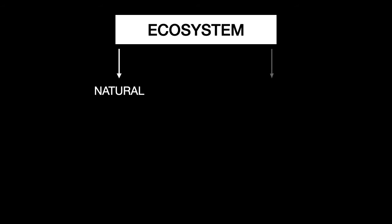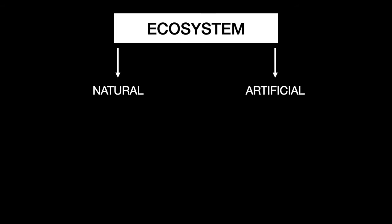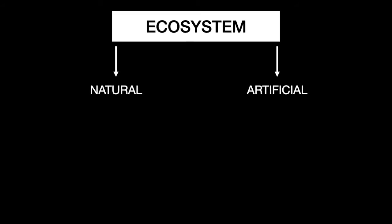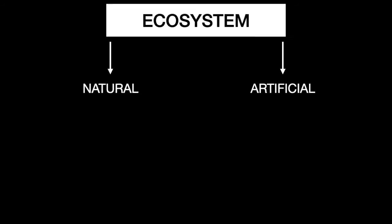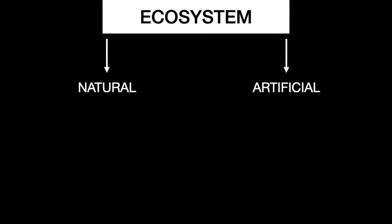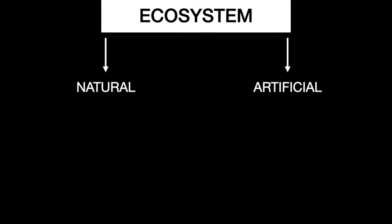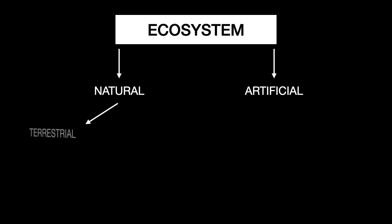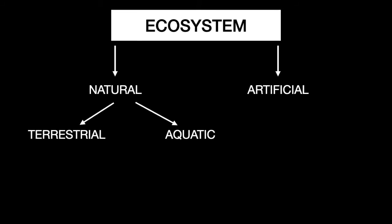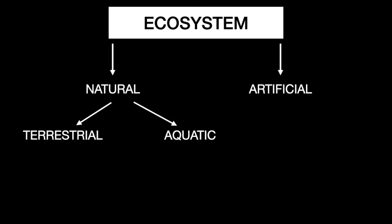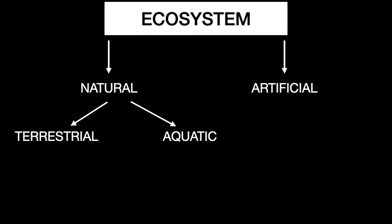The ecosystem can be divided into two parts: natural and artificial. Examples of artificial ecosystems are croplands like maize, wheat, and rice fields, which are completely man-made. Natural ecosystems can be classified into two parts: terrestrial ecosystem and aquatic ecosystem. Terrestrial ecosystem is a land-based community of organisms; aquatic ecosystem is an ecosystem in a body of water.